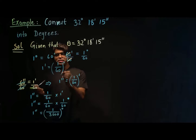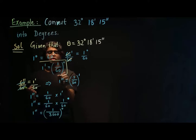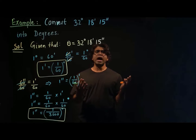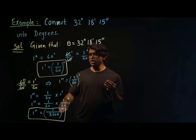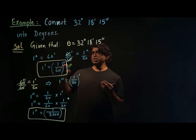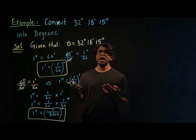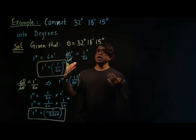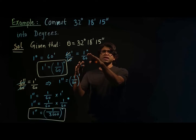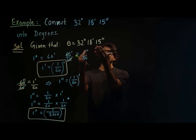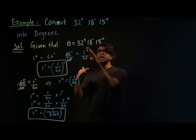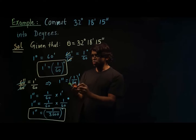So as you can see, one minute is one over 60 degrees and one second is one over 3600 degrees. The reason why I'm converting everything in terms of degrees — minute in terms of degree and second in terms of degree — is because the question asks us to find everything in terms of degrees. When we separate degrees, minutes, and seconds, we need to convert seconds into degrees and minutes into degrees, so we need these relationships.